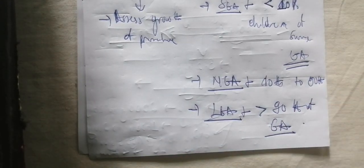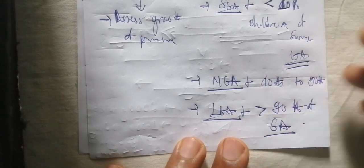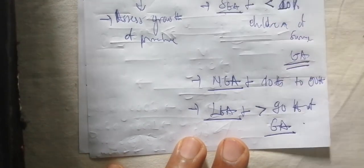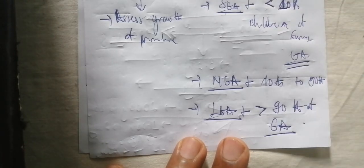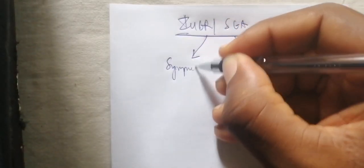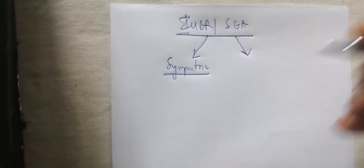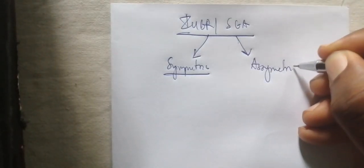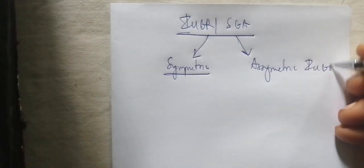So when you have a child whose weight is less than 10% of children of the same gestational age, it is called small for gestational age, or intrauterine growth restriction. Intrauterine growth restriction is divided into two types: symmetric intrauterine growth restriction and asymmetric intrauterine growth restriction.